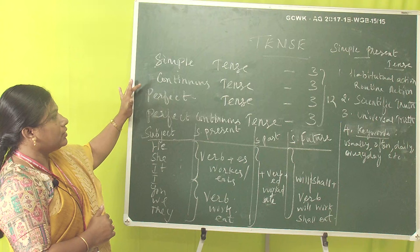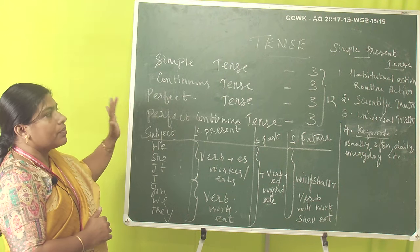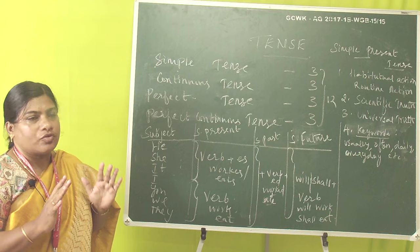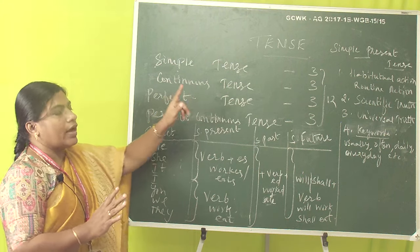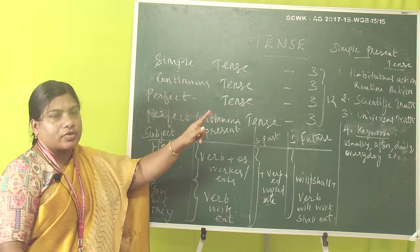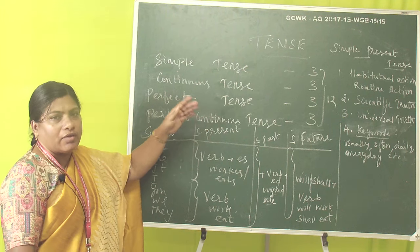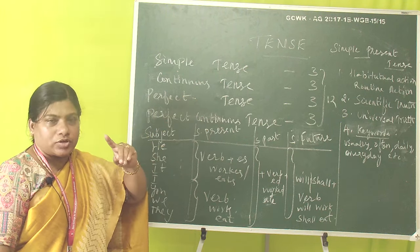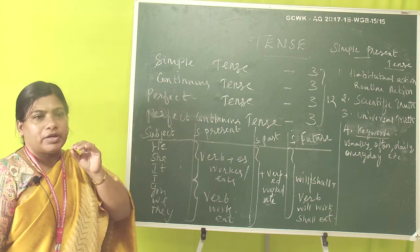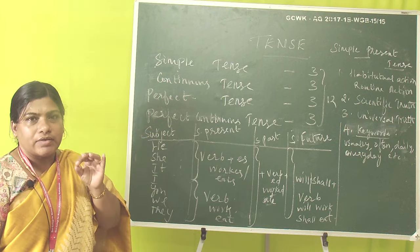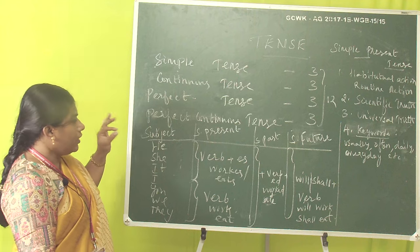I have written on the board: simple tense, continuous tense, perfect tense, and perfect continuous. These are the basic concepts of tense. For all four types, we have present, past, and future — so you have to know these 12 forms of tenses in total.